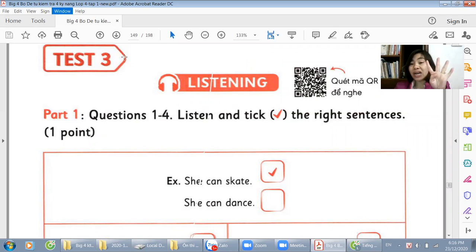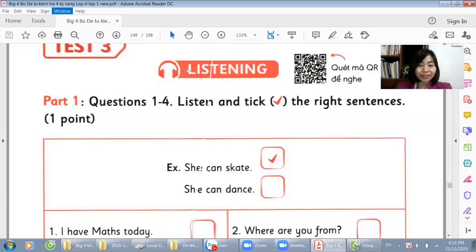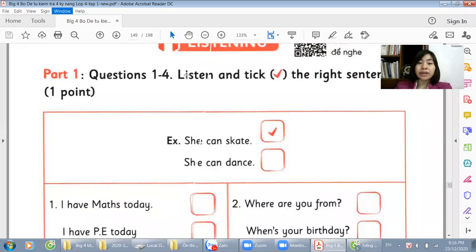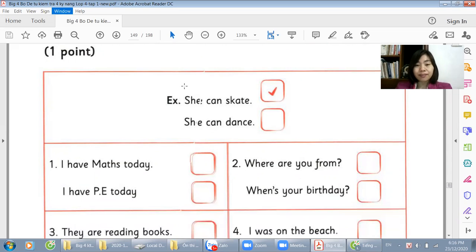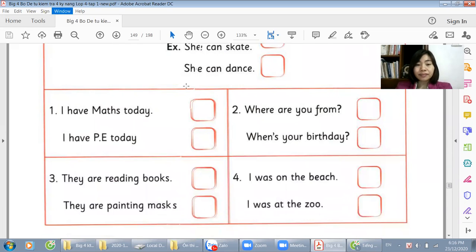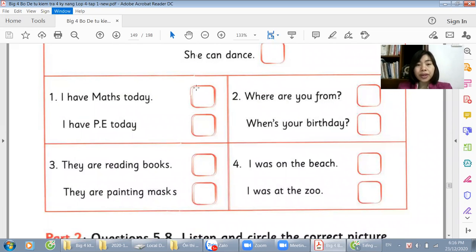So there are four parts as usual: listening, reading, writing and speaking. So let's go to the first part, listening. Now come on. There are four parts in the listening. Part one, from question one to four, listen and tick the right sentence. Are you ready? Here we go.